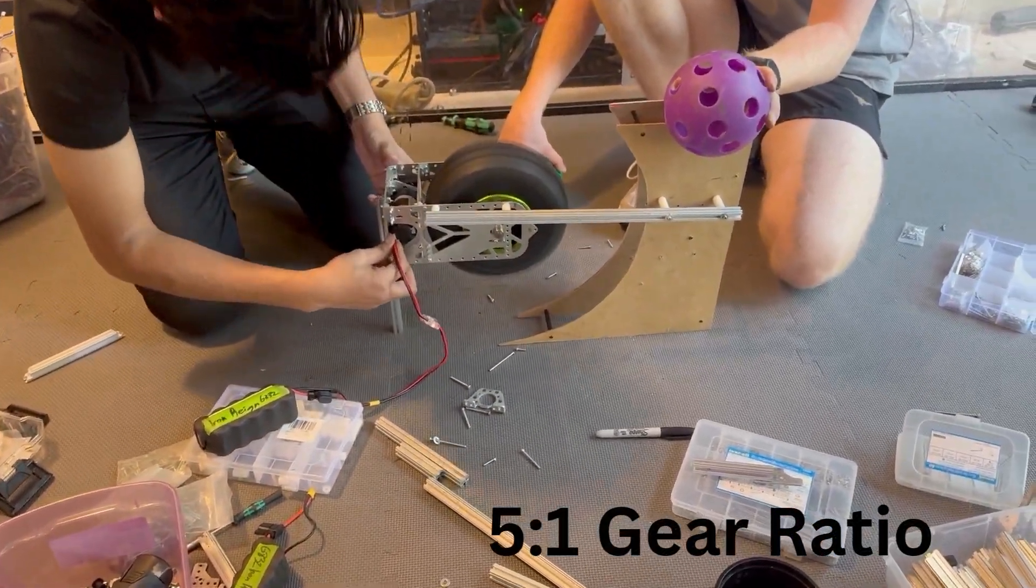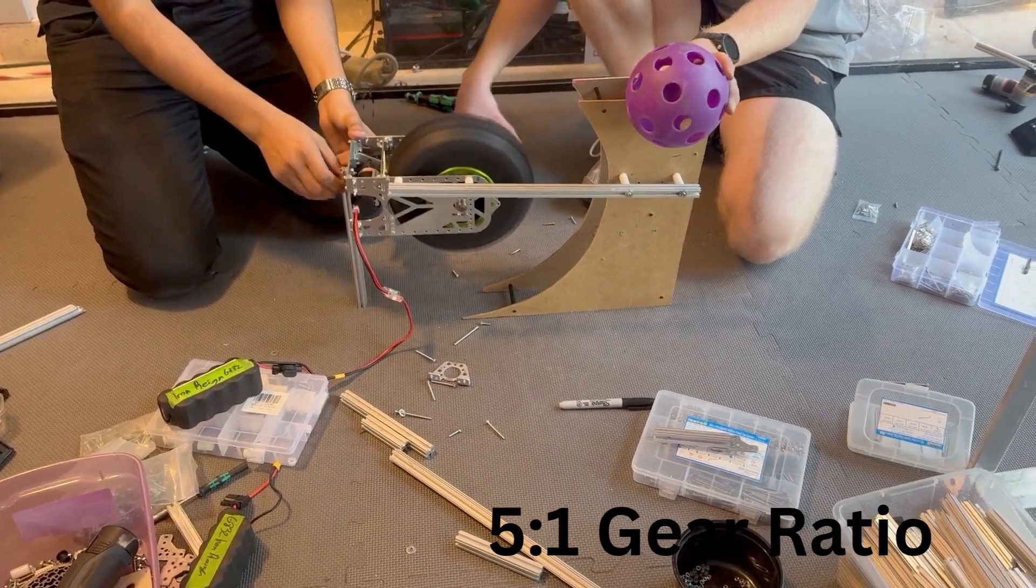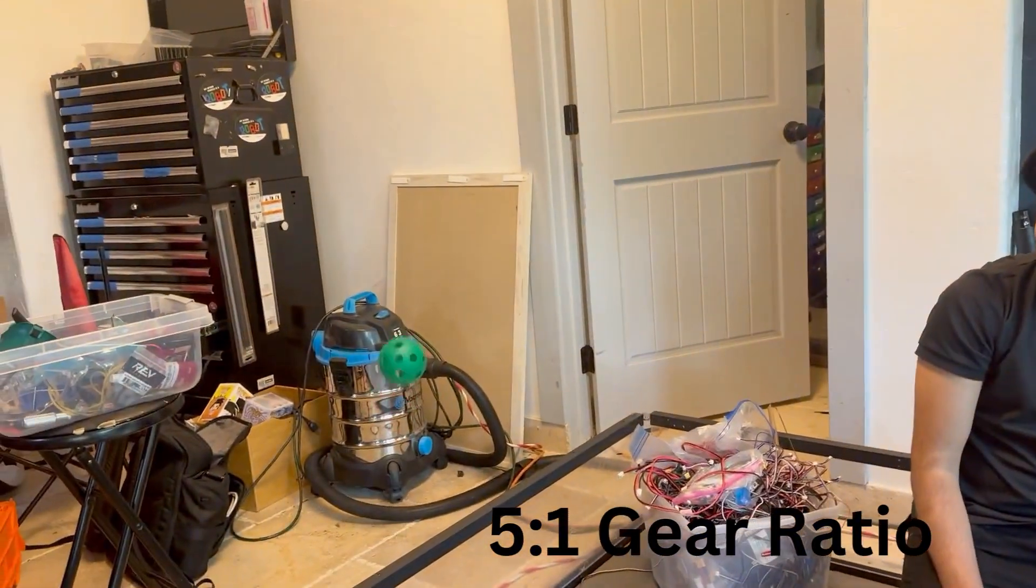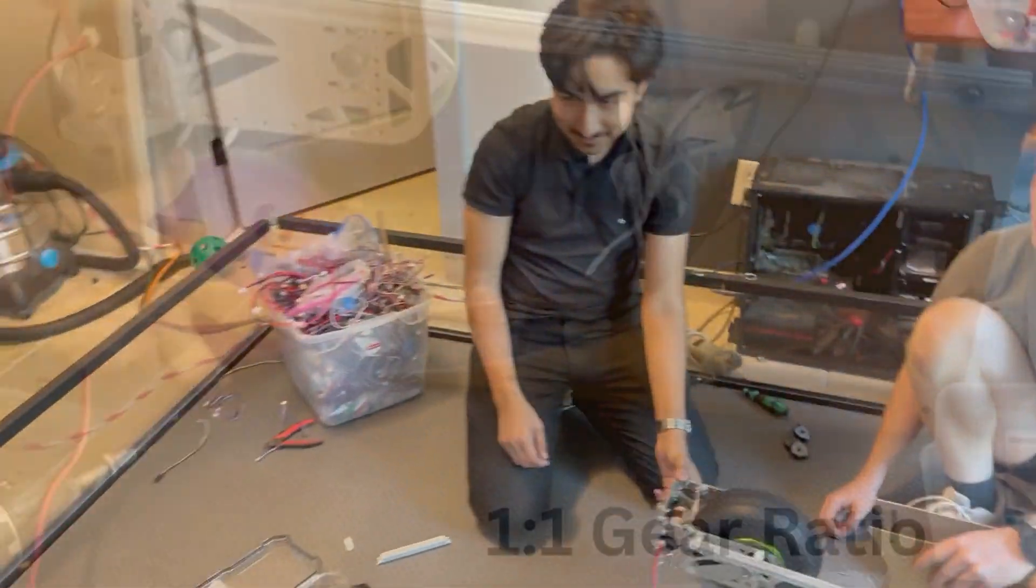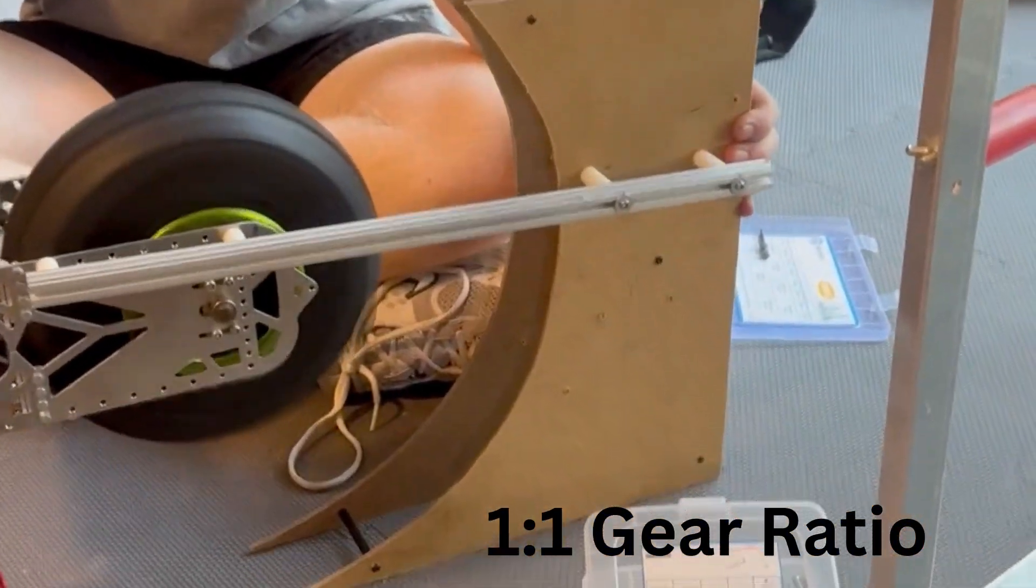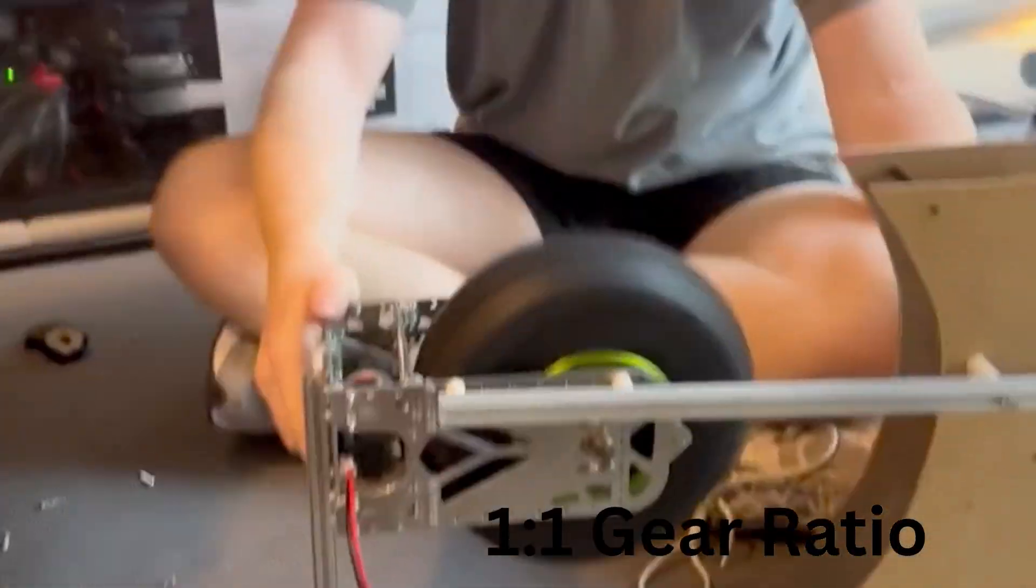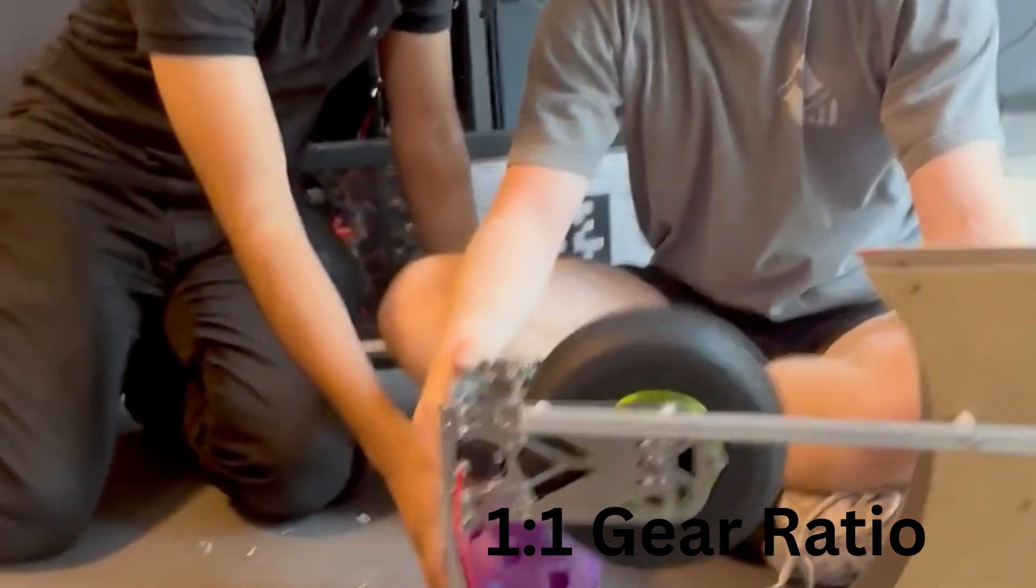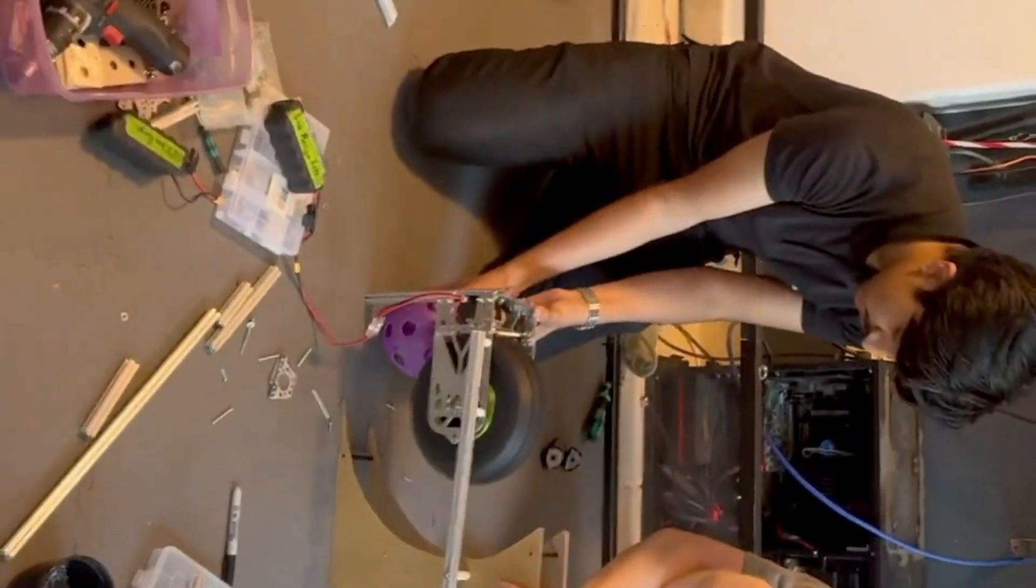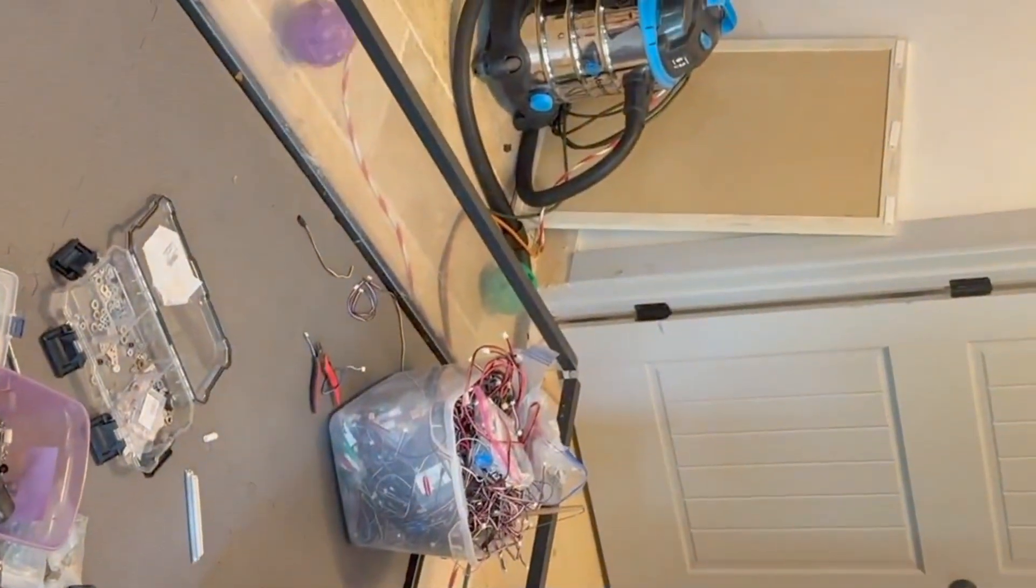When we first tried it, we realized the gear ratio was too high, so we changed it from the pre-existing 12 to 1 to a 5 to 1 ratio. However, the wheel was still moving too slow because the sprocket system also had its own gear ratio built in. So we reduced the gear ratio even further to a 1 to 1. This gave us a better RPM, but to actually get the correct distance and height, we would need to build our own custom flywheel.